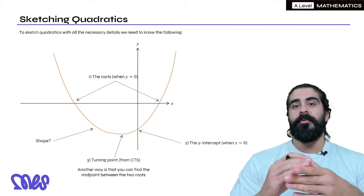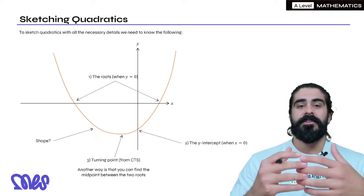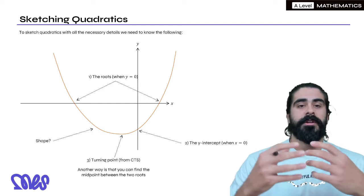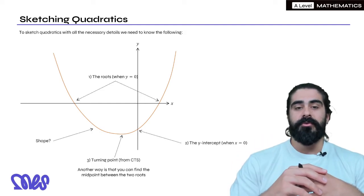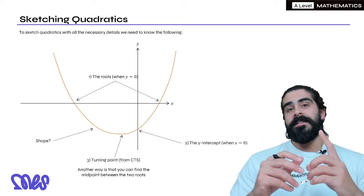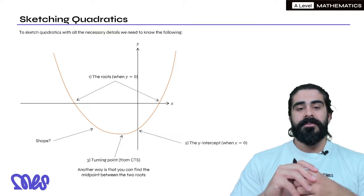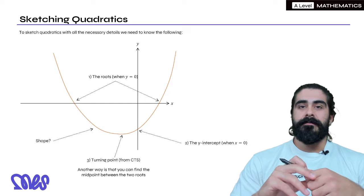So we know that the roots are where the quadratic meets the x-axis, so we make y equal zero. Usually we can factorize to do this, or we can complete the square, or use the quadratic formula. The y-intercept for a quadratic is just the term independent of x, and we're going to practice our completing the square.